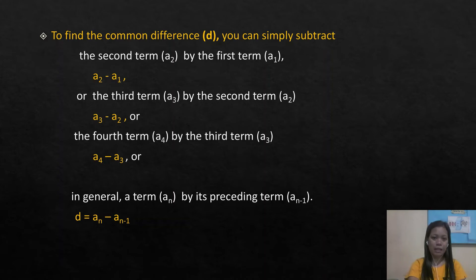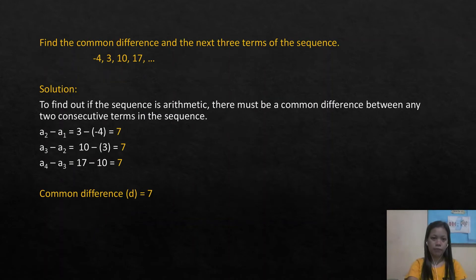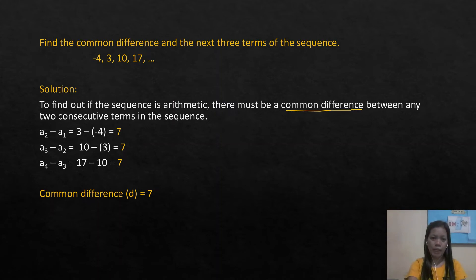To find the common difference, you can simply subtract the second term by the first term, or the third term by the second term, or the fourth term by the third term — in general, any term minus its preceding term. To confirm a sequence is arithmetic, there must be a common difference between any two consecutive terms.